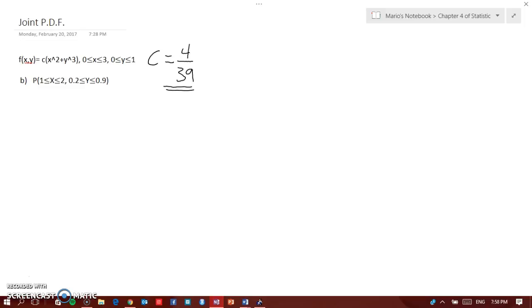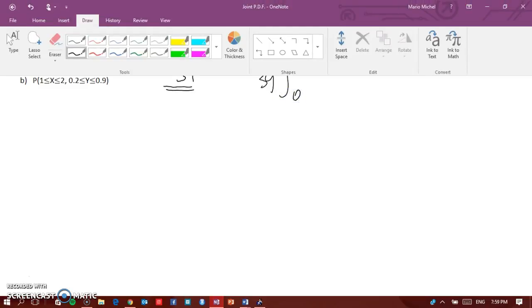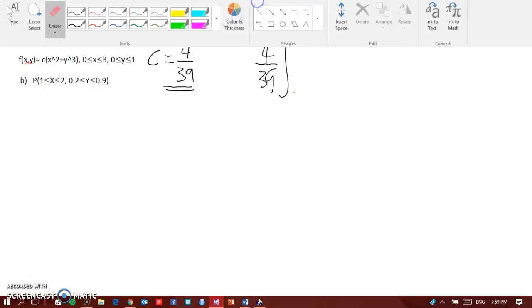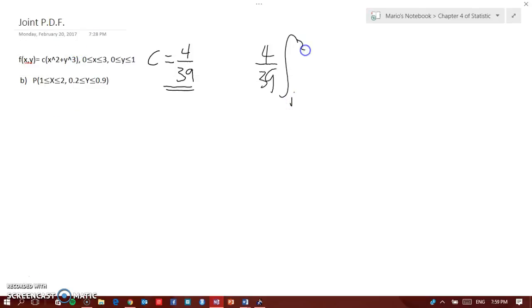So now we're going to find out what the probability is. We're gonna write down 4 over 39, and because it's a joint PDF we get double integral from 1 to 2 and 0.2 to 0.9 of x squared plus y cubed dy dx.